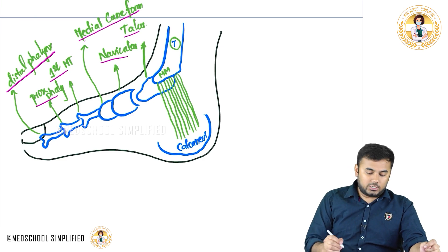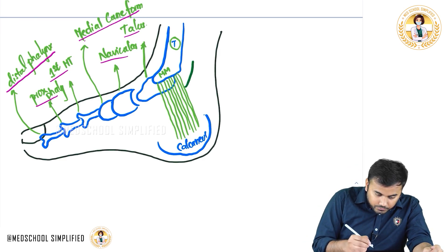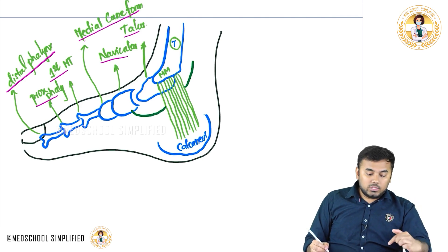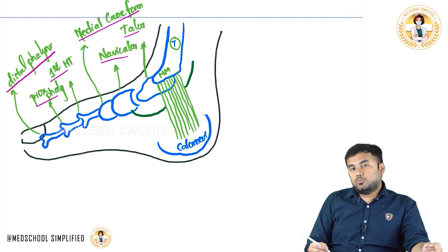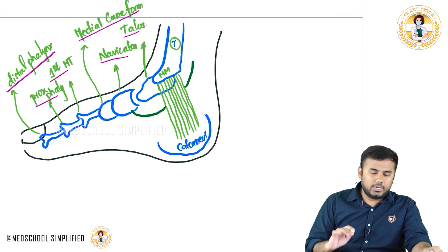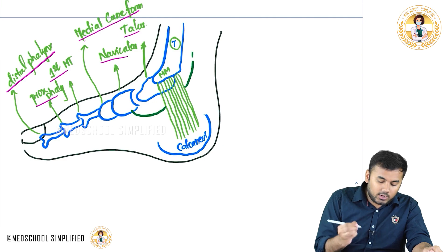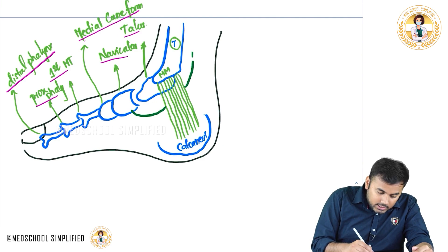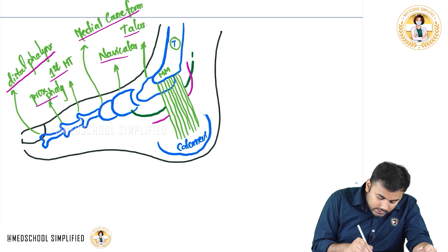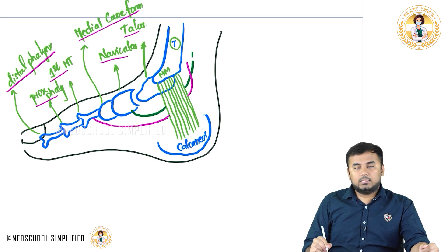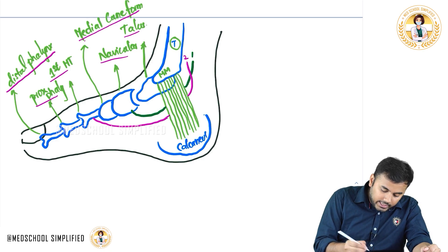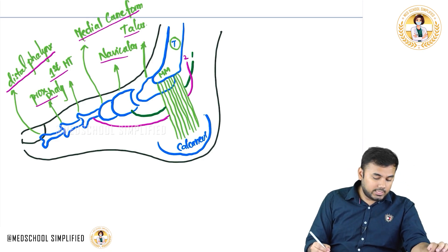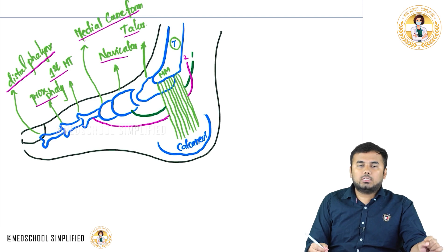The first structure is coming down all the way and inserting to your navicular bone — this is called tibialis posterior. After this you see a pink color structure coming down all the way and going and inserting to your first metatarsal. This is the second structure and it is called flexor digitorum longus. We are discussing the flexor retinaculum, which is on the plantar side, so here it is flexor digitorum longus, not extensor.